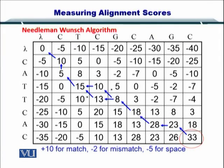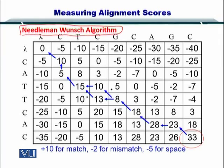Let's review what we did in the Needleman-Wunsch algorithm. This algorithm was a global alignment strategy, and it helped us to start from the last element in the matrix and move to the first element. The important thing to note here is that we used a +10 for a match, a -2 for a mismatch, and a -5 for a gap penalty.